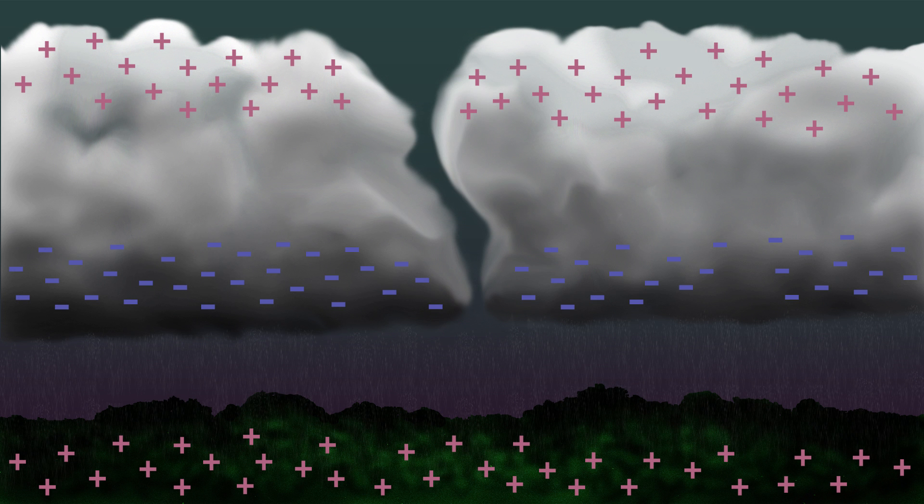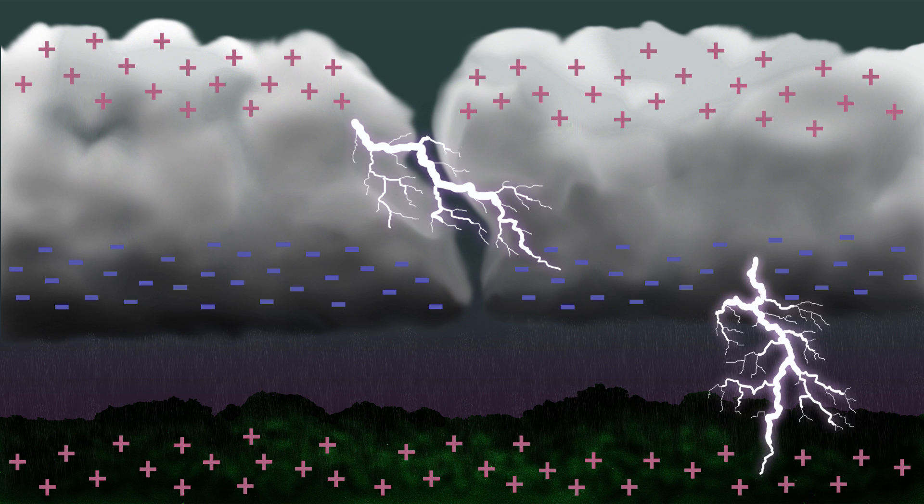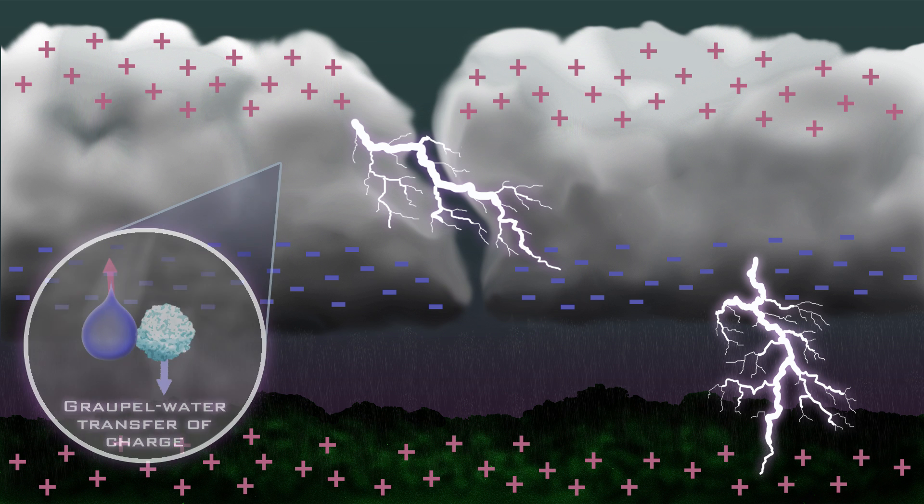Lightning is due to the separation of charge by rubbing, but note that the details of charge separation in clouds is not well understood. It is hard to get up into a thundercloud to do research. Lightning is an electrical discharge that can occur between clouds and from cloud to ground.